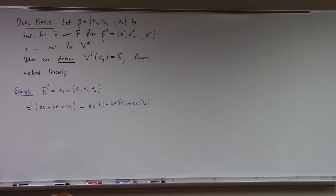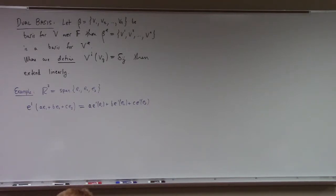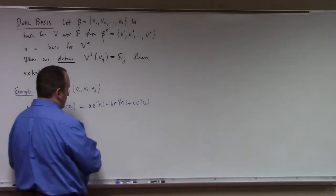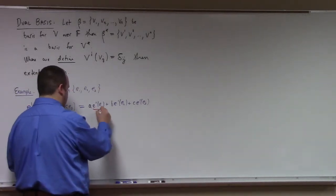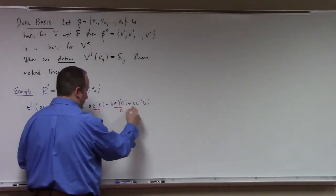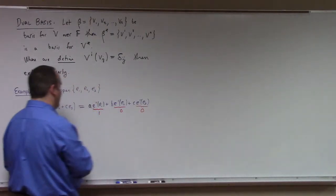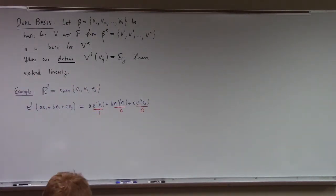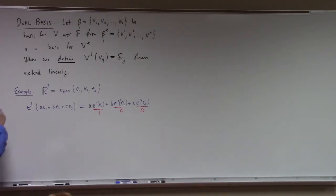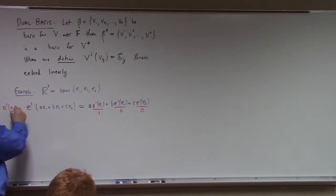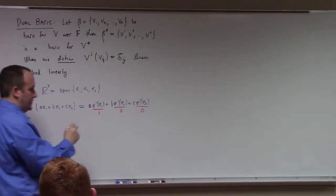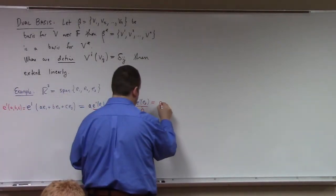By definition, e^1 acting on e_j is only non-zero if j equals 1. So by construction, e^1(e₁) = 1, e^1(e₂) = 0, and e^1(e₃) = 0. So e^1 acting on the vector (a, b, c) is actually just equal to a.